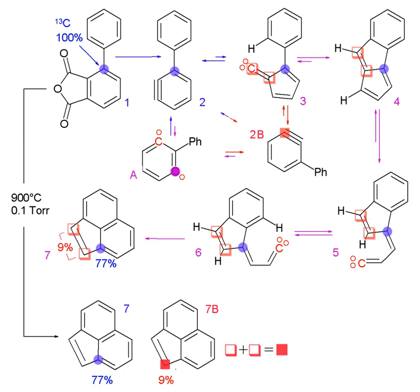Radioisotopic labeling is a technique for tracking the passage of a sample of substance through a system. The substance is labeled by including radionuclides in its chemical composition. When these decay, their presence can be determined by detecting the radiation emitted by them.